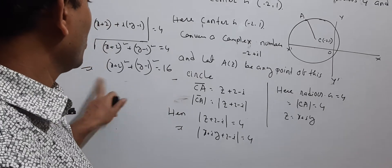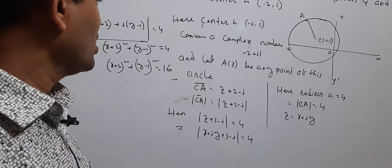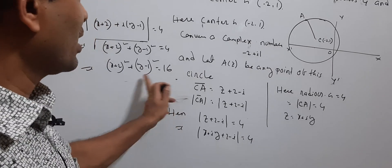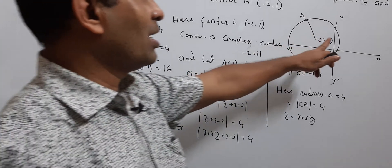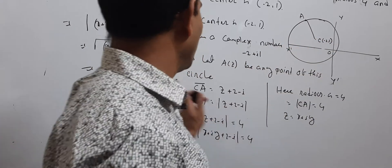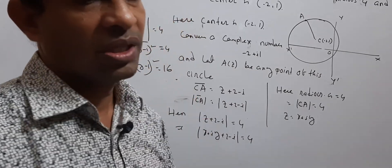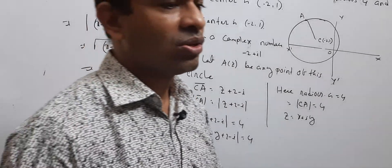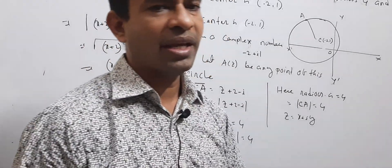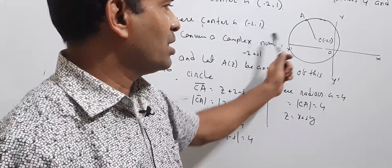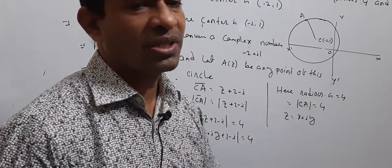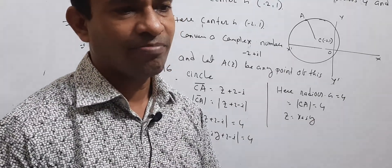This is the equation of the circle with center (−2, 1) and radius 4. Converting from complex number form, this equation represents a circle.